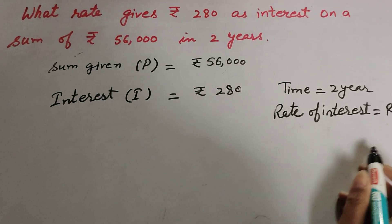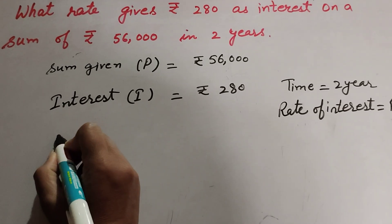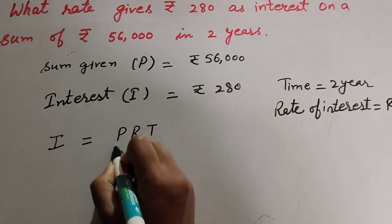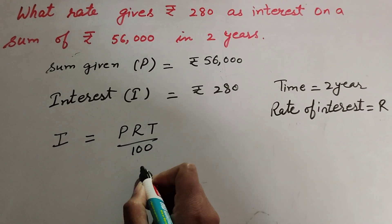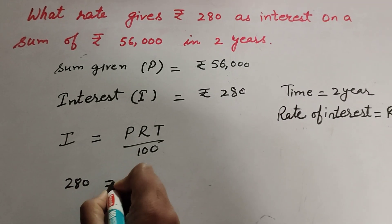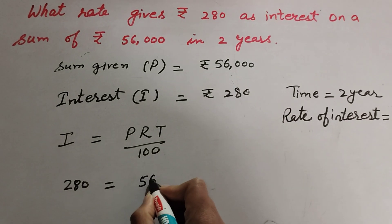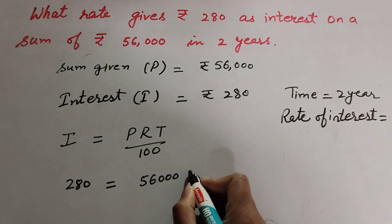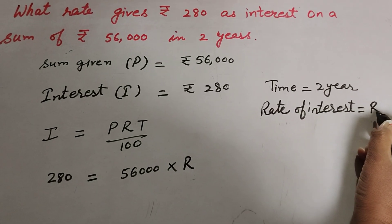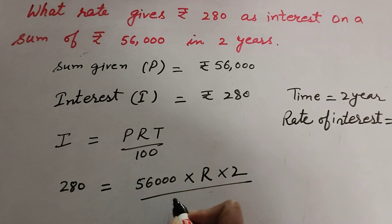We know the formula to find interest: I = P × R × T over 100. So, 280 = 56,000 × R × 2 over 100.